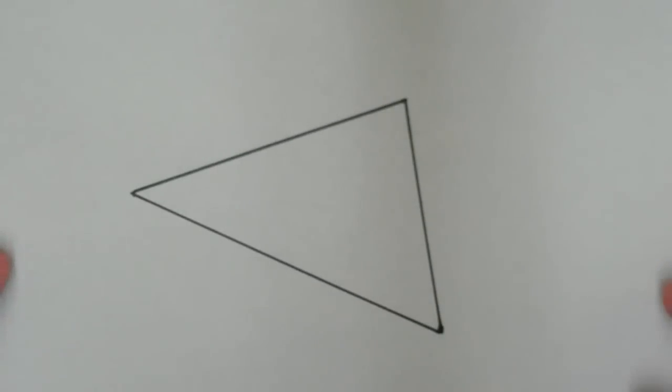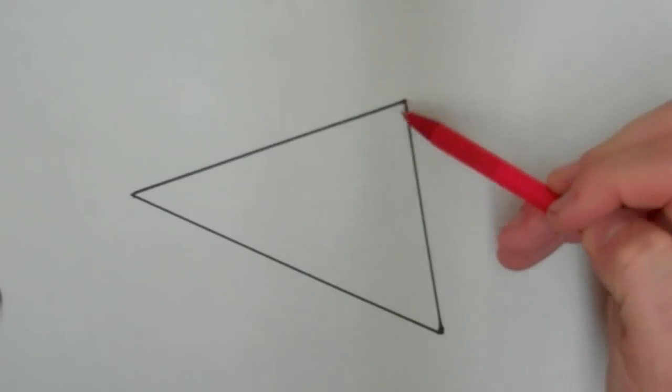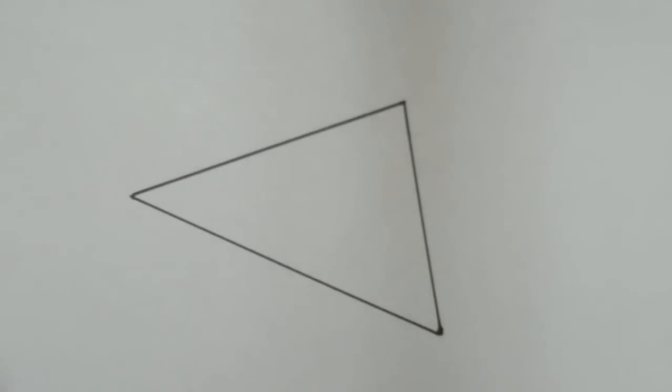Okay, this tutorial is for constructing the centroid of a triangle. As you know, the centroid is the intersection of the medians of the triangle. Now, a median is a segment that joins a vertex with the midpoint of the opposite side.